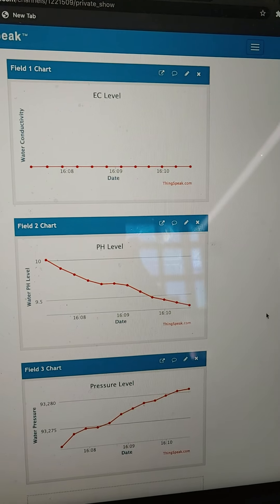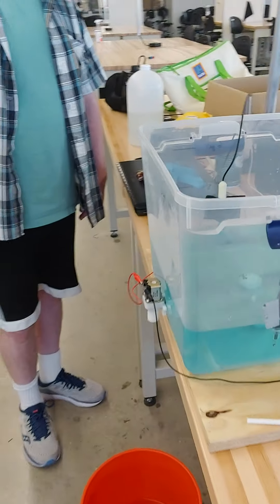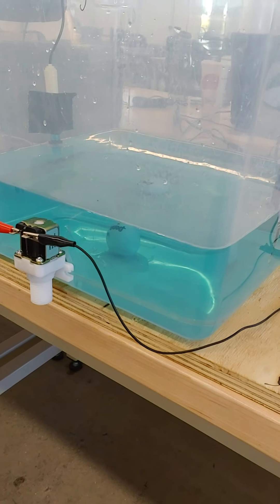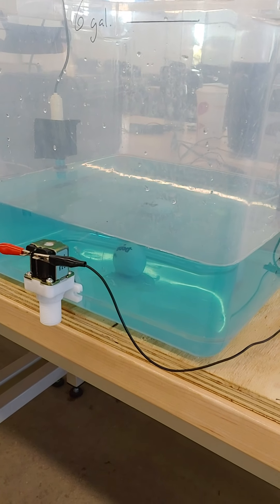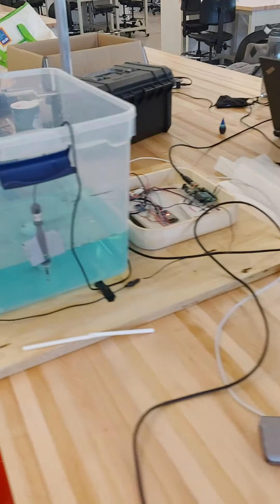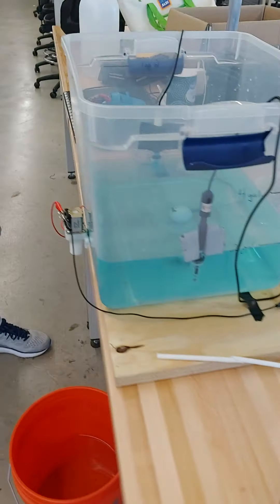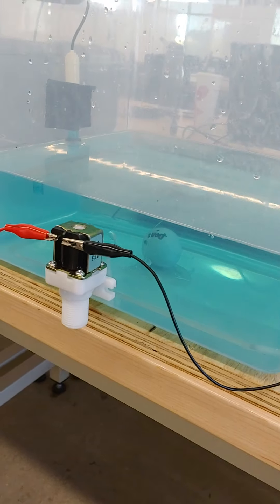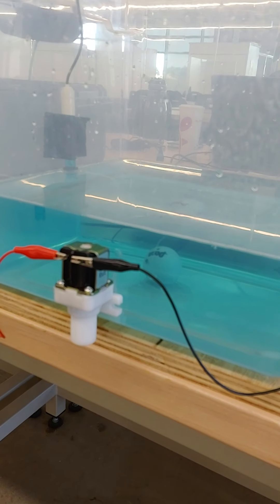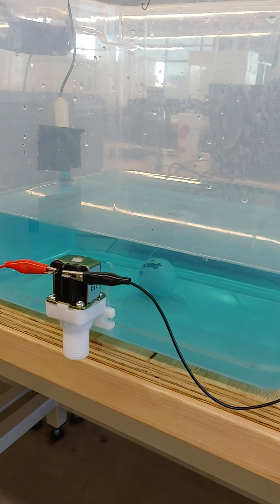The pH level has been moving because of the water and food coloring solution. We see movement there and the pressure as well is steadily rising because we dumped in the water and it's increasing and stabilizing as it just sits there.